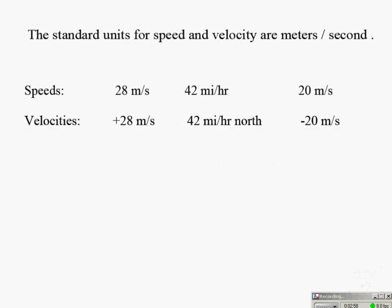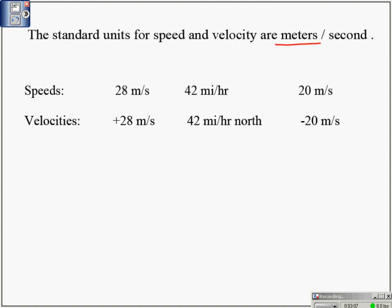For this course, the standard unit for velocity and speed is meters per second. You must convert to meters for distance or displacement and to seconds for time before doing any calculations. For example, 28 meters per second is a speed, while positive 28 meters per second indicates forward or to the right, and negative 20 meters per second tells you the object is moving to the left.